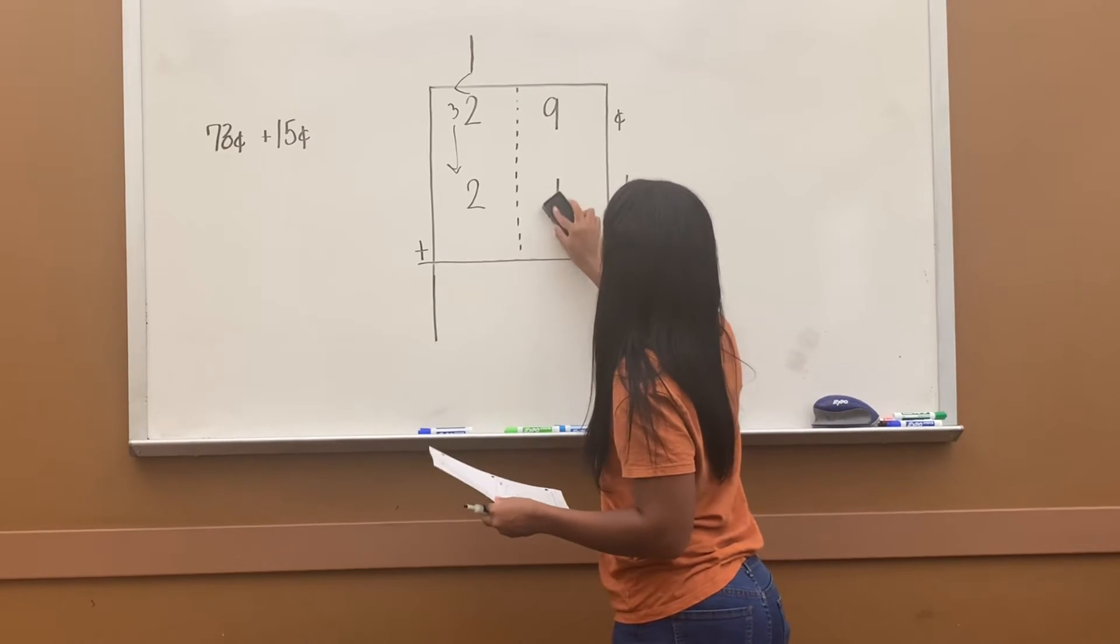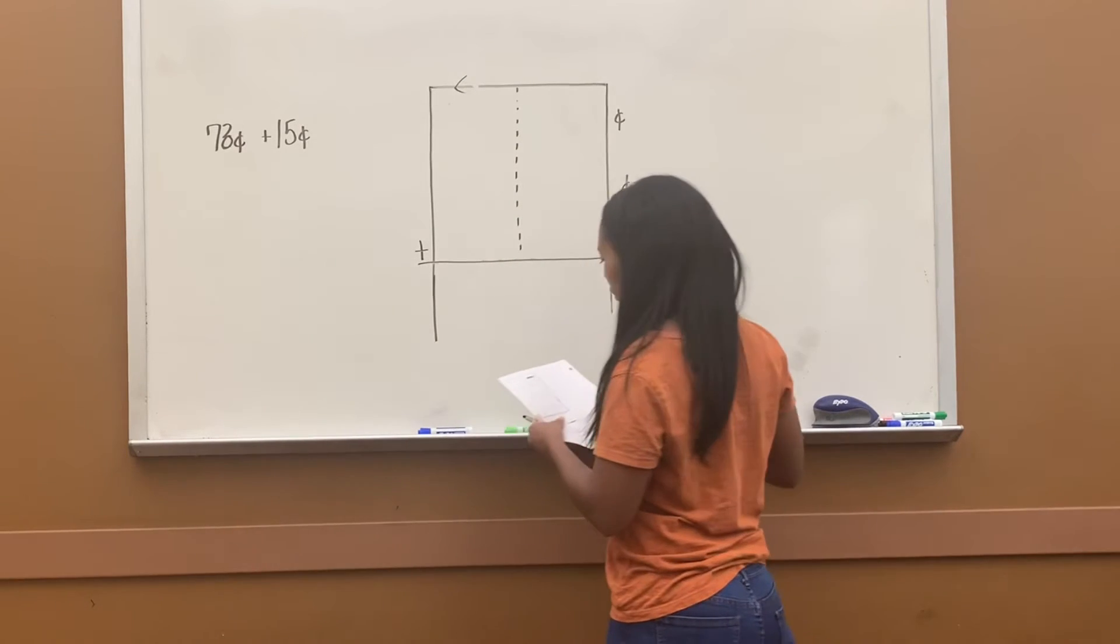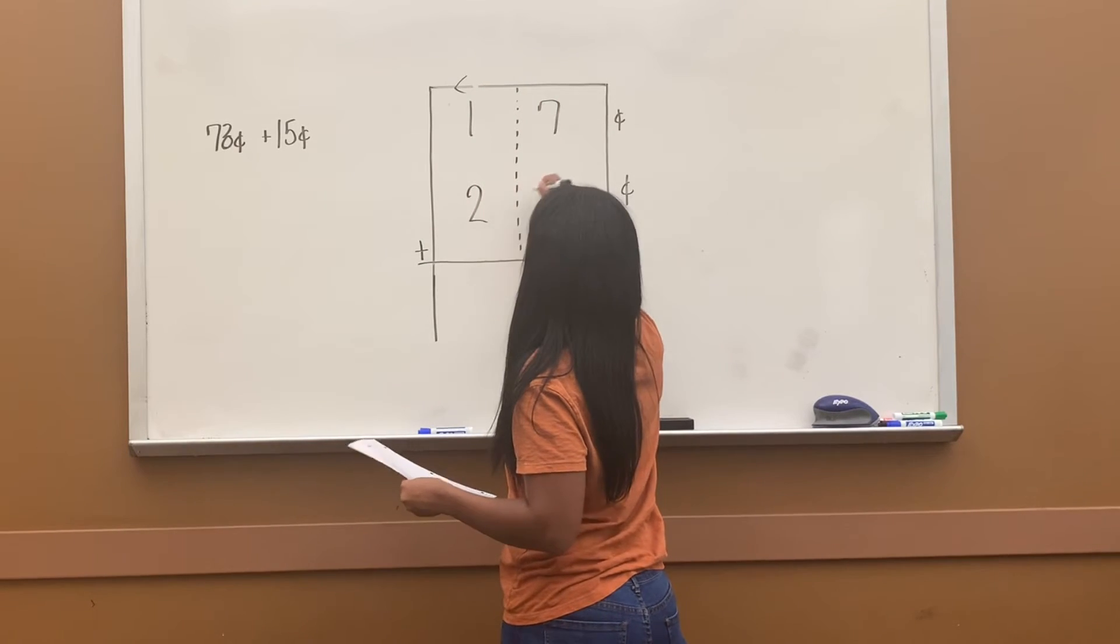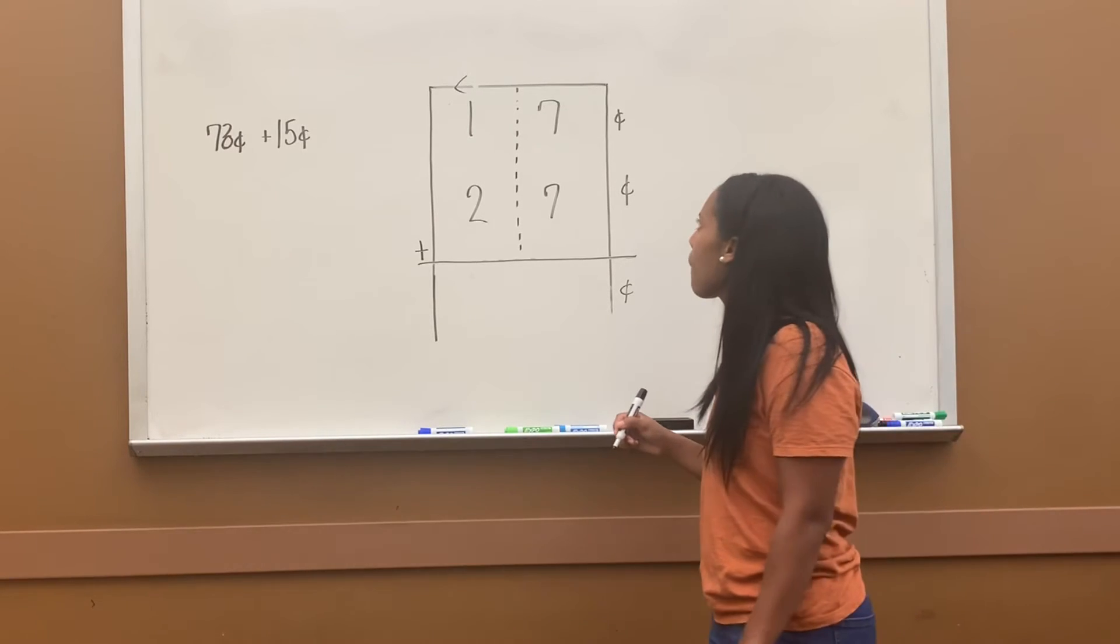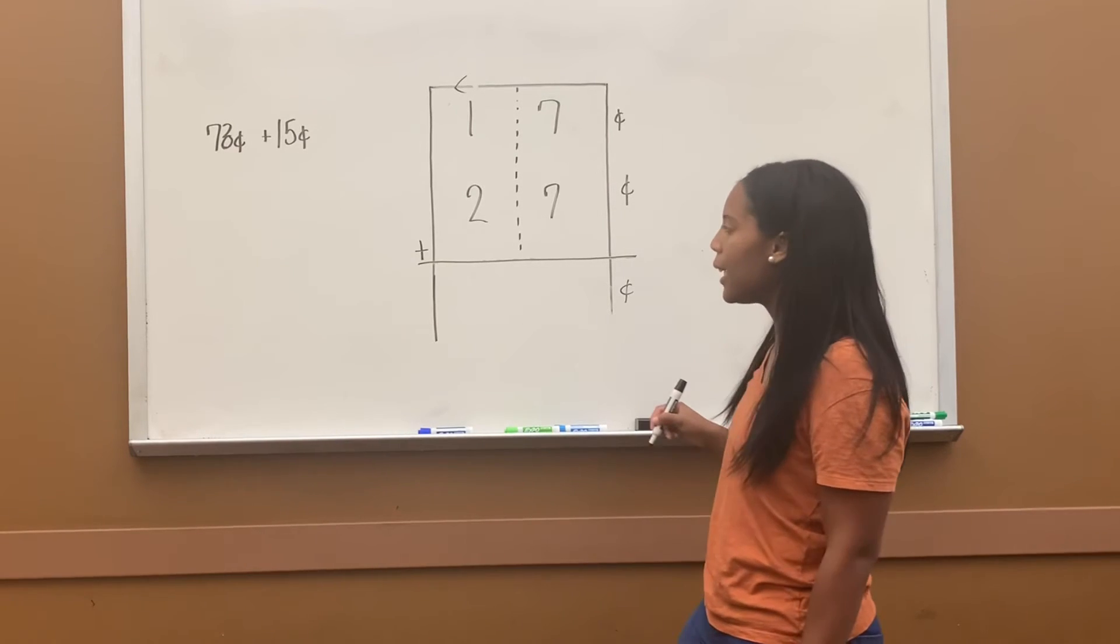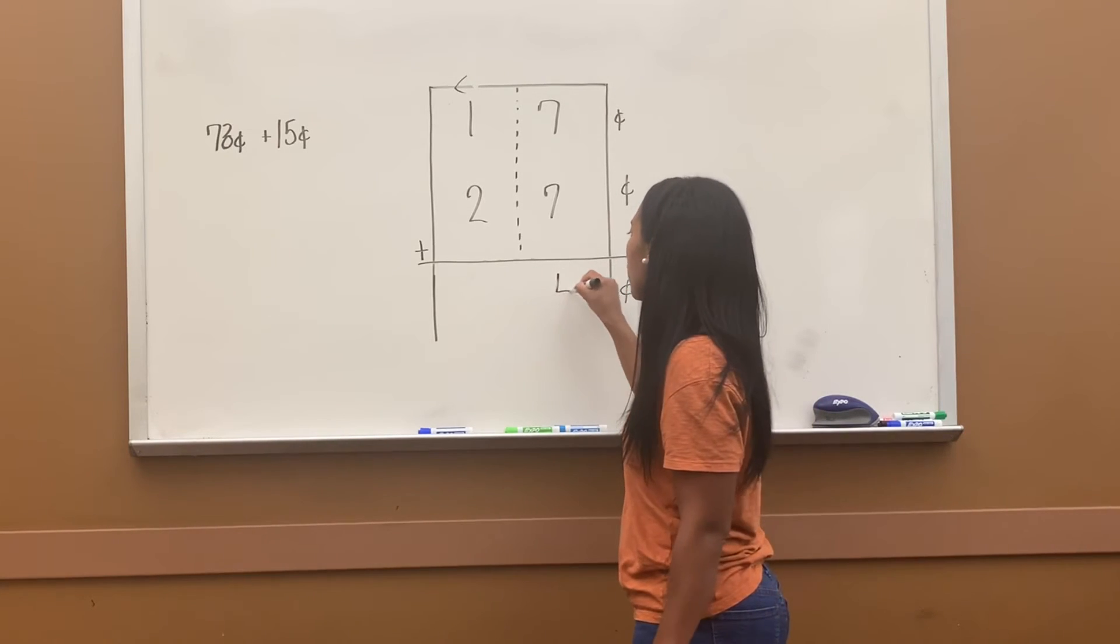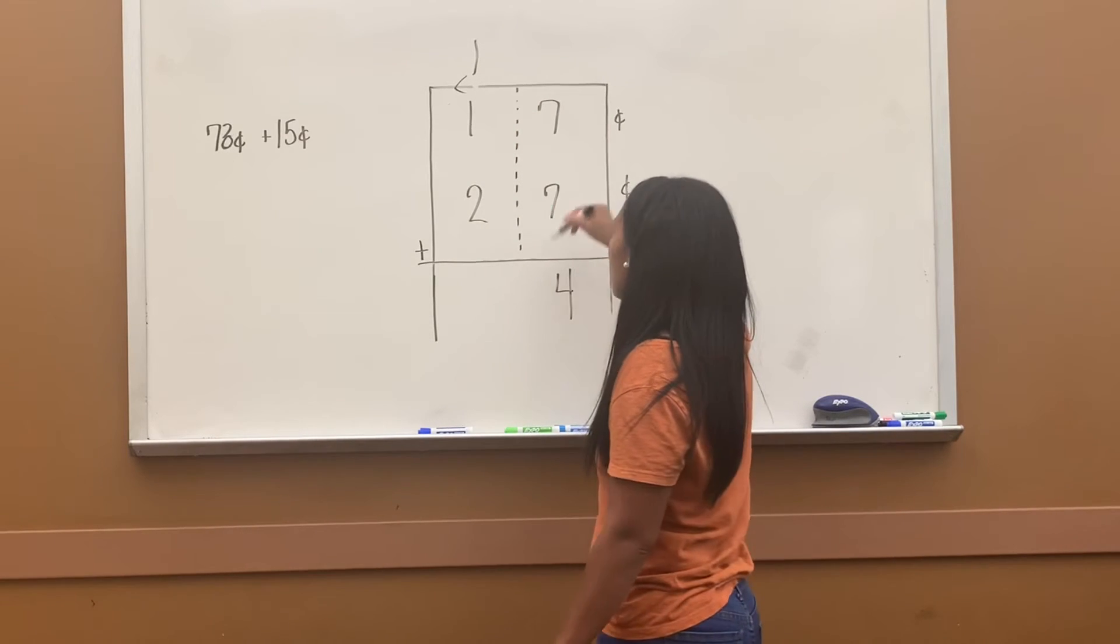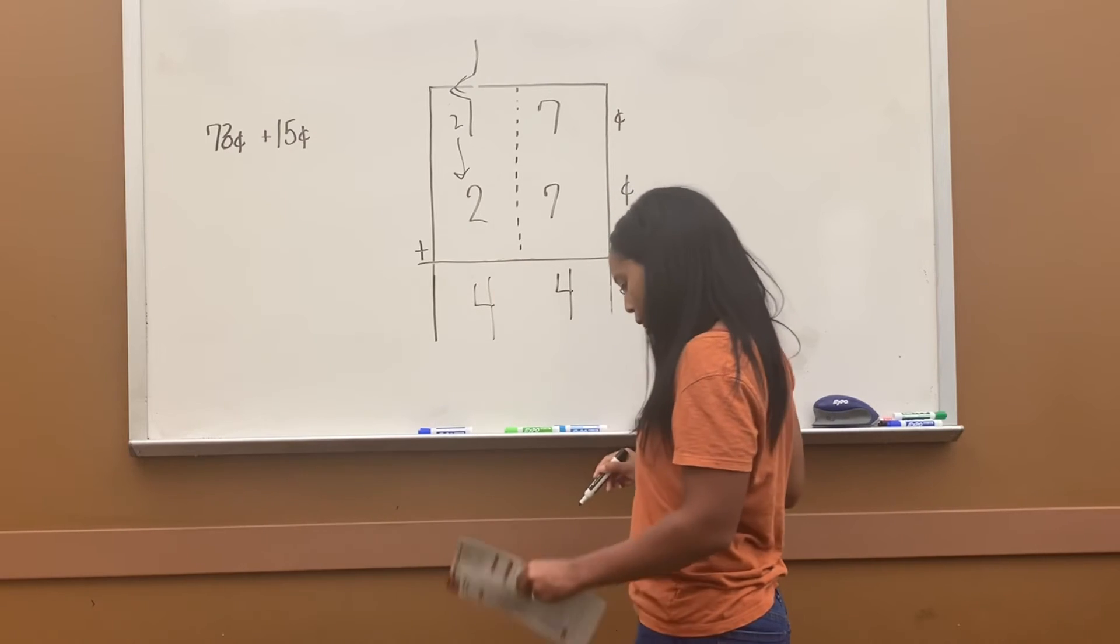Let's do number 3. 17 cents plus 27 cents. So set it up in your box like this. Let's start with our back number. 7 plus 7 equals 14. So I only put the 4 here, and I put my 1 above here. Still the number 14, I just had to set it up differently. Now I add 1 plus 1 is 2, 2 plus 2 is 4. 44 cents.